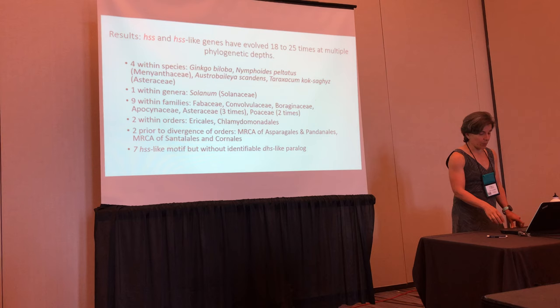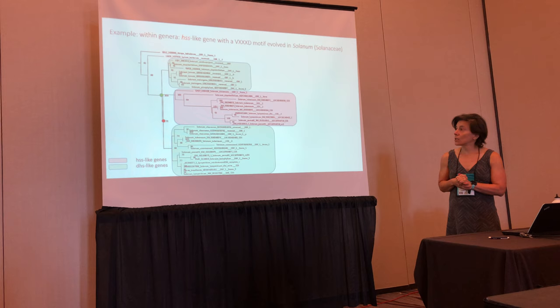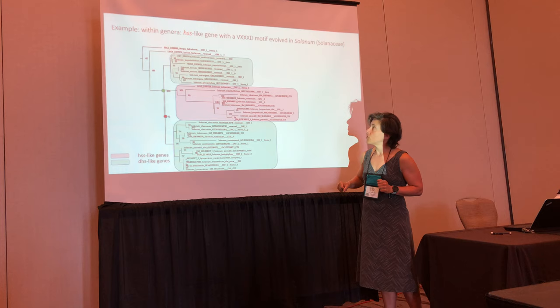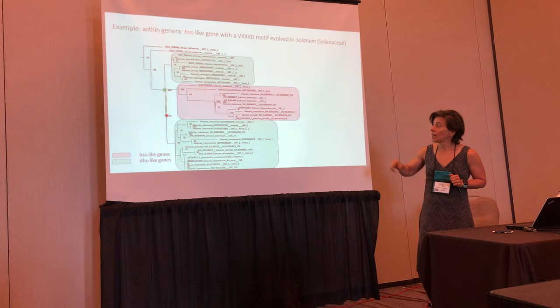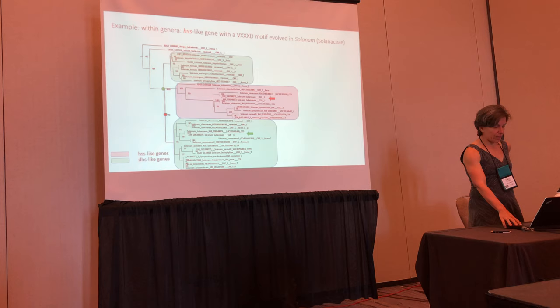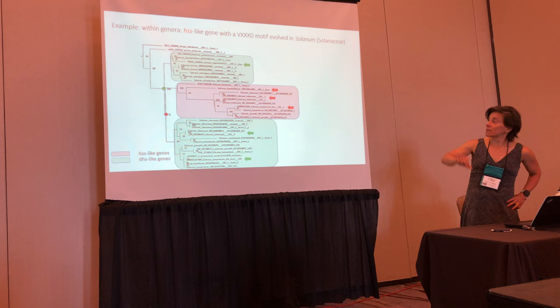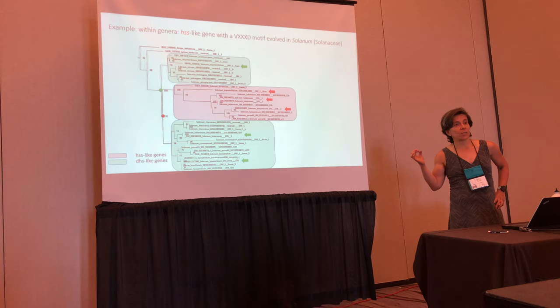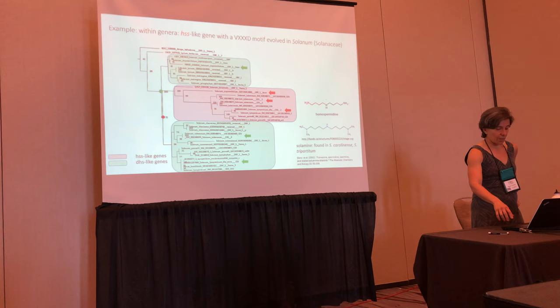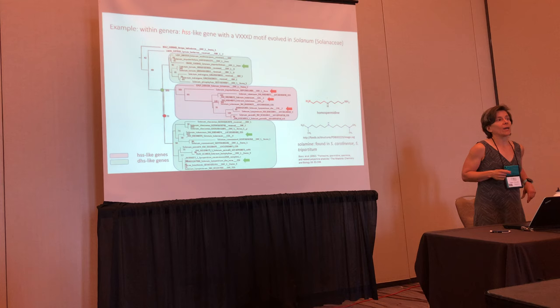Let me show a couple of examples. In the genus Solanum, we see two duplications giving rise to two clades of DHS-like genes, highlighted in green, and one clade of HSS-like genes with longer branch lengths. There are the HSS and DHS of Solanum tuberosum and Solanum lycopersicum, with the DHS of Solanum sisymbriifolium in the other clade. Interestingly, tomatoes and potatoes do not have pyrrolizidine alkaloids, but they do have compounds like Solanine that actually look a lot like homospermidine — so this might be an example of a different biosynthetic pathway that has recruited HSS.